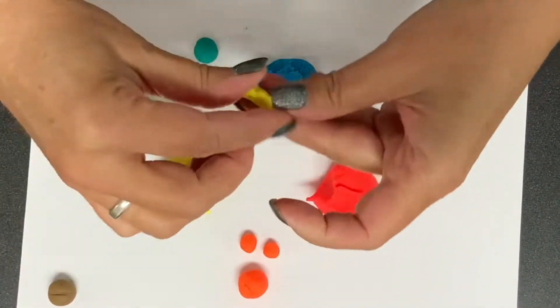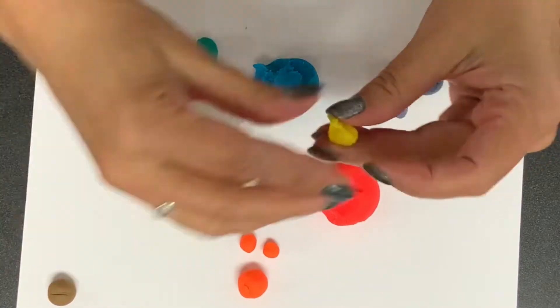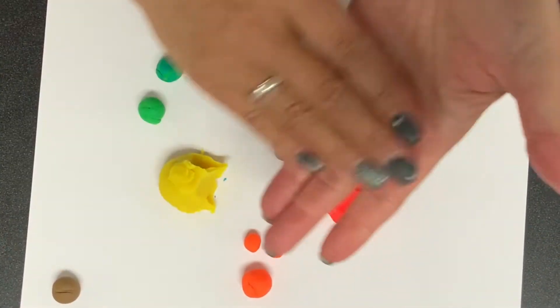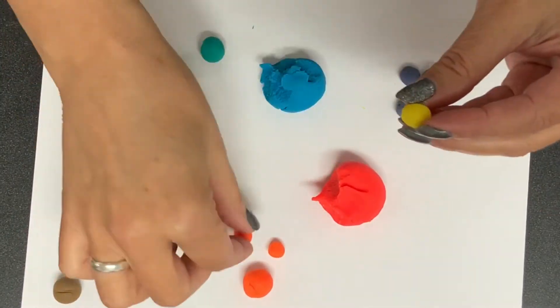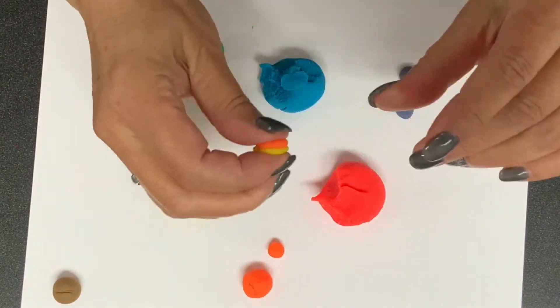We're gonna move on to yellow and orange. We are gonna mix a yellow and an orange together to create yellow orange. And that is also our tertiary color.